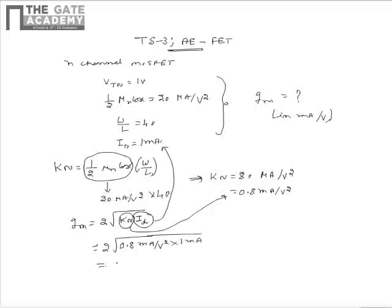This upon simplification can be obtained as 1.79 milliampere per volt. From this we see that the transconductance for the given n-channel MOSFET is 1.79 milliampere per volt. Hence the correct option representing the transconductance is B.